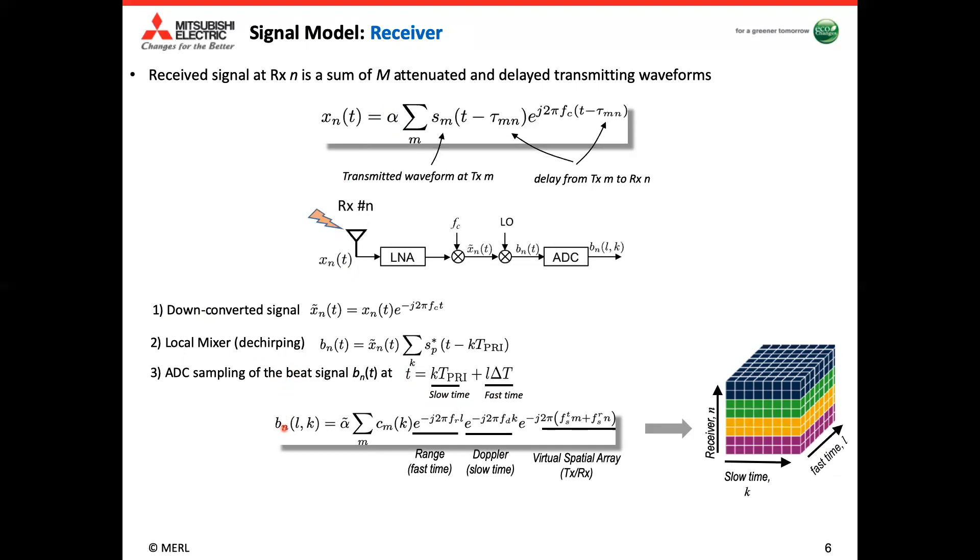So now the beat signal for each receiver, the beat signal is basically two-dimensional data. So if we stack all the receivers on top of each other, we're going to have this 3D data cube, slow time, fast time, and the receiver side. Now if we look at one receiver, this two-dimensional data will carry both range, Doppler, and spatial information. For the range, it basically carries the information of the range frequency f_r over the fast time index, and then the Doppler velocity f_d over the slow time index or pulse index. And then we have the spatial information f_st from transmitter side and f_sr from the receiver side. But right now these two are not separated because we have the weighted sum over all the transmitters. So the automotive radar normally will first get the range and the Doppler frequencies from the standard range Doppler processing.